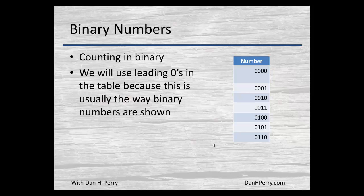When we count in binary numbers, and I'm showing the leading zeros because that's typical when we work with binary numbers, we go from 0 to 1 to 1 0, 1 1, 1 0 0, and so on.